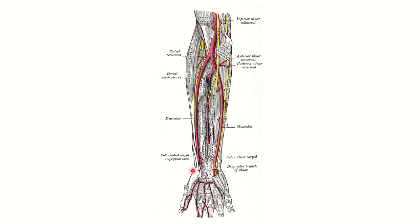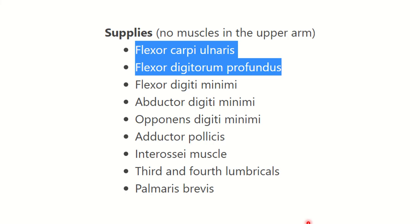Here is the ulnar nerve — it passes behind the medial epicondyle. Here you can see the median nerve and the brachial artery, which divides into the radial artery and ulnar artery, and here the radial nerve. The ulnar nerve passes down to the wrist joint, passes through the canal of Guyon, and divides into two parts: one superficial and one deep. The deep branch supplies muscles of the palm of the hand, while the superficial branch provides cutaneous innervation.